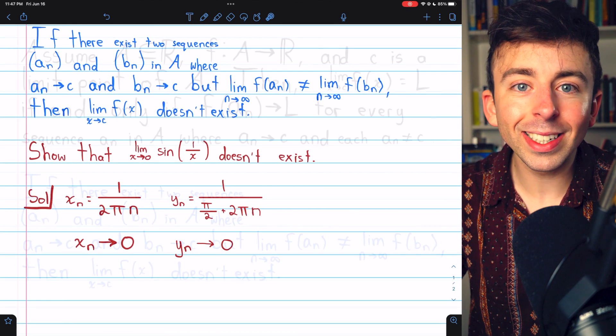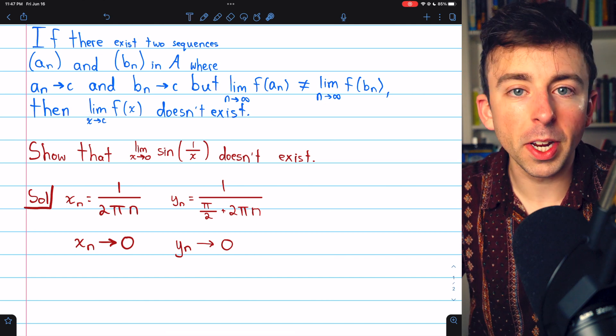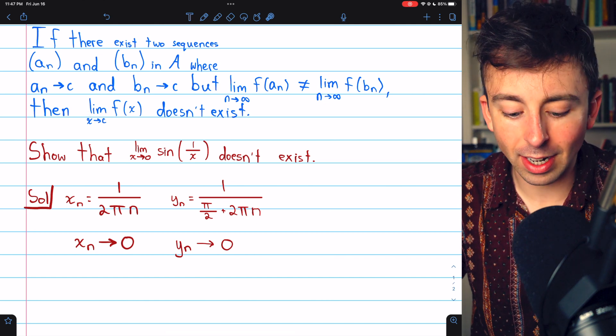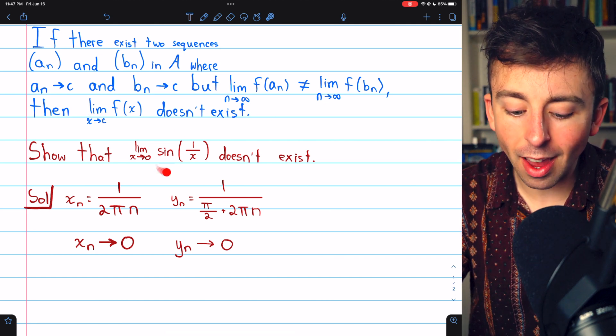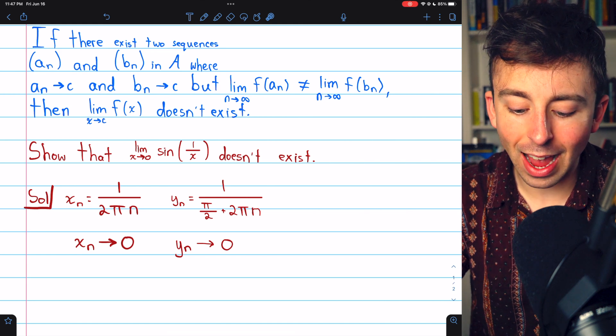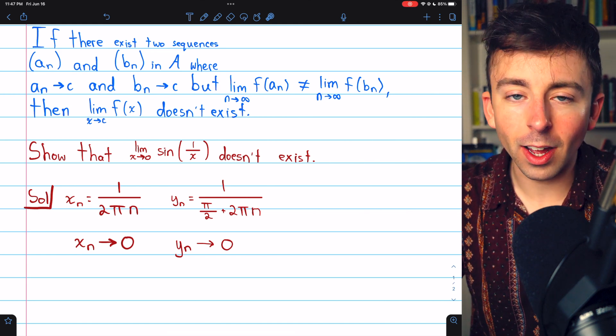Let's try using this. We're going to use this sequential criterion for the limit of a function not existing to show that the limit of sin(1/x) as x approaches zero does not exist.